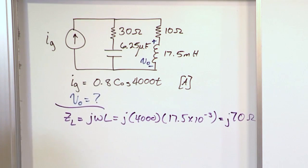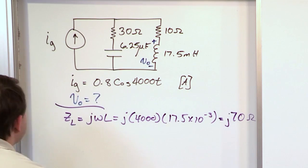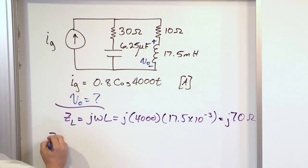All right, so it's an inductance, j70 ohms. The next thing I want to figure out is the impedance associated with this capacitor. So, one over j omega C.